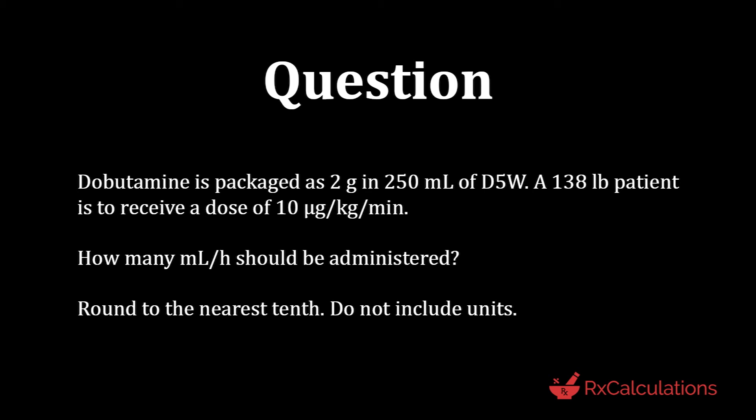So let's get right to it. This question says dobutamine is packaged as 2 grams in 250 milliliters of D5W. A 138-pound patient is to receive a dose of 10 micrograms per kilogram per minute. How many milliliters per hour should be administered? Round to the nearest tenth; do not include units.